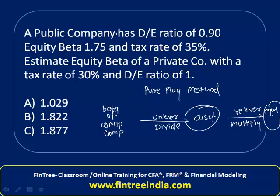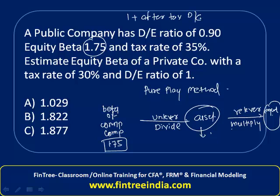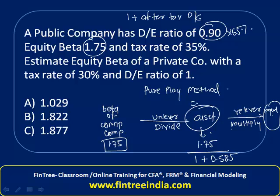The beta of the comparable company is given as 1.75. Step one is to derive the asset beta by unlevering — we divide by 1 plus the after-tax debt-equity ratio of the respective company. So asset beta equals 1.75 divided by 1 plus (0.90 × (1 − 0.35)). That gives 1 plus 0.585, which equals 1.585. So asset beta = 1.75 / 1.585 = 1.104.